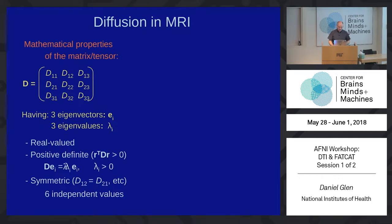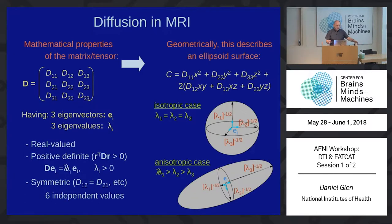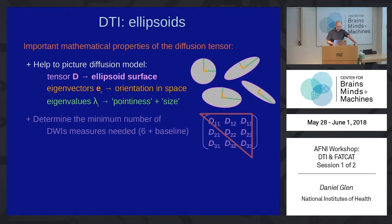Here's our diffusion tensor matrix again. We can solve this diffusion tensor to get the three primary eigenvectors and the three eigenvalues from it. Those will give us the directions of those vectors. Geometrically, this is an ellipsoid surface, and that's one way to visualize diffusion tensor images.